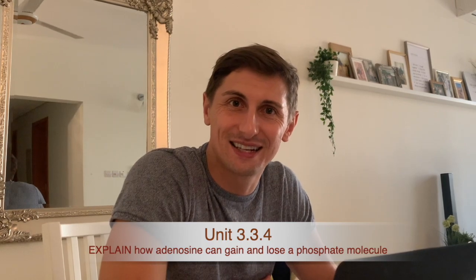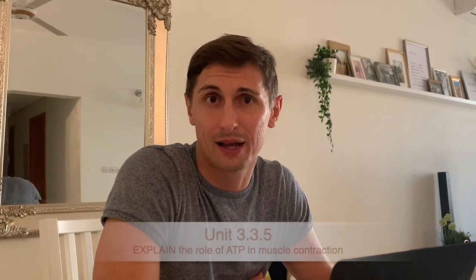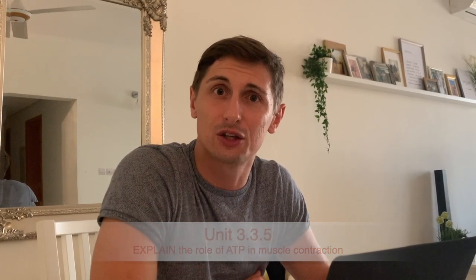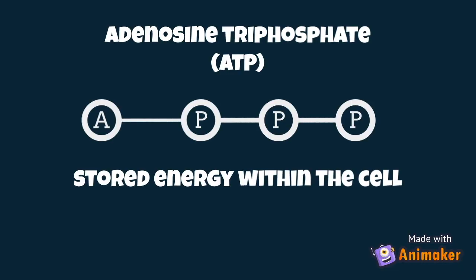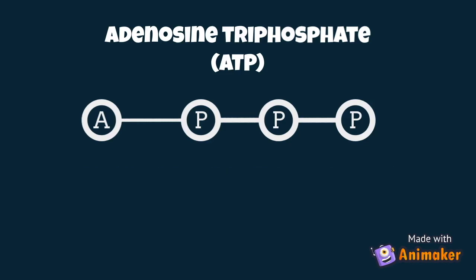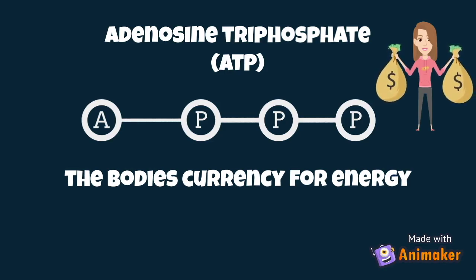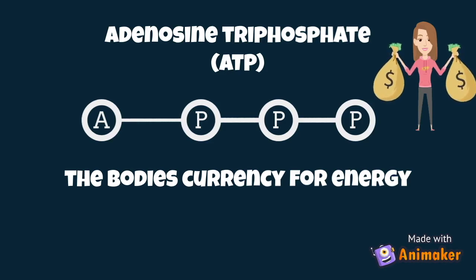We're going to explain how adenosine can gain and lose a phosphate — how ATP becomes ADP and is resynthesized back into ATP — and also explain the role of ATP in muscle contraction. You'll need to cross-reference this with the neuromuscular video for the sliding filament theory. Adenosine triphosphate, or ATP, is stored energy within the cell and the only currency the body uses for energy. Glucose is like the traveler's checks — it must be cashed in to get ATP. There are many pathways such as glycolysis and lipolysis, but ultimately it always comes back to ATP.